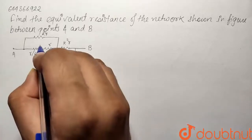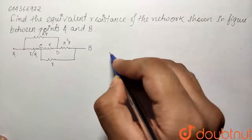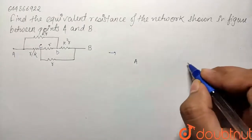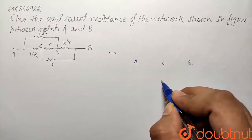So what I'll take, let us take this point to be C and this point to be D. So if I build an equivalent circuit, I'll take this as my point A, this as my point B, let us say this is my point C and this is my point D.